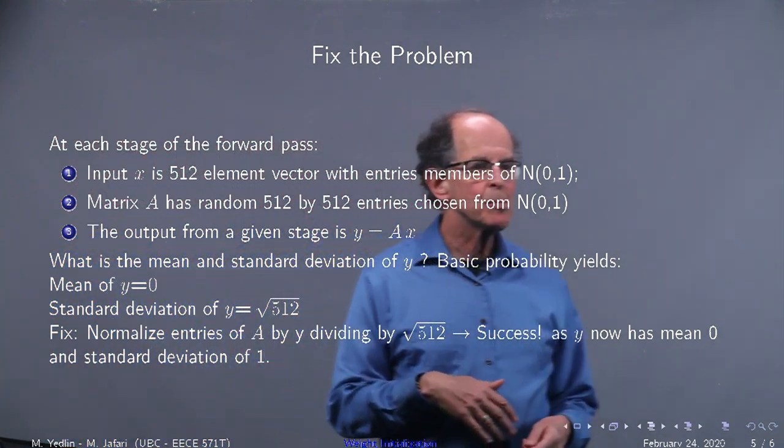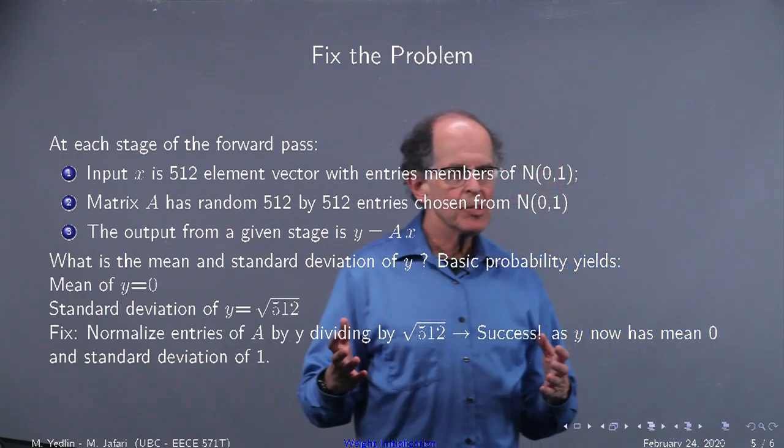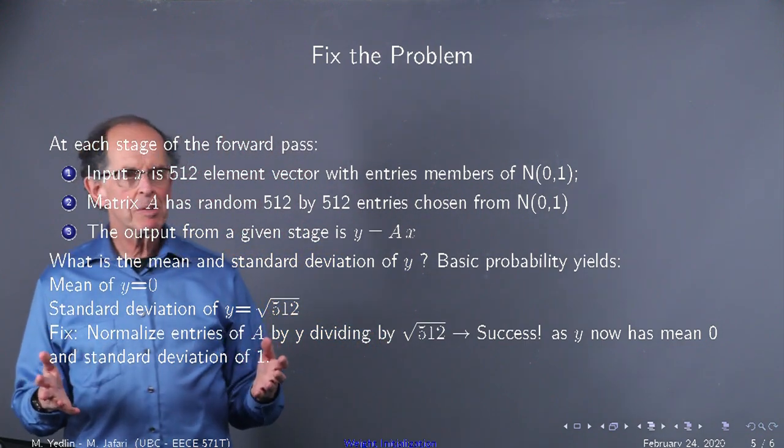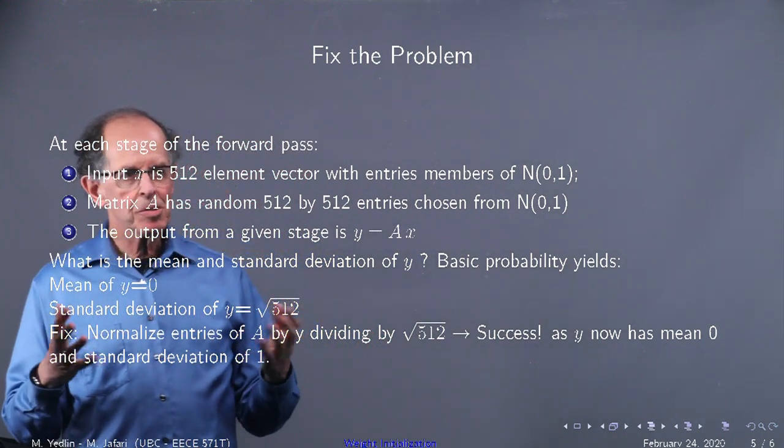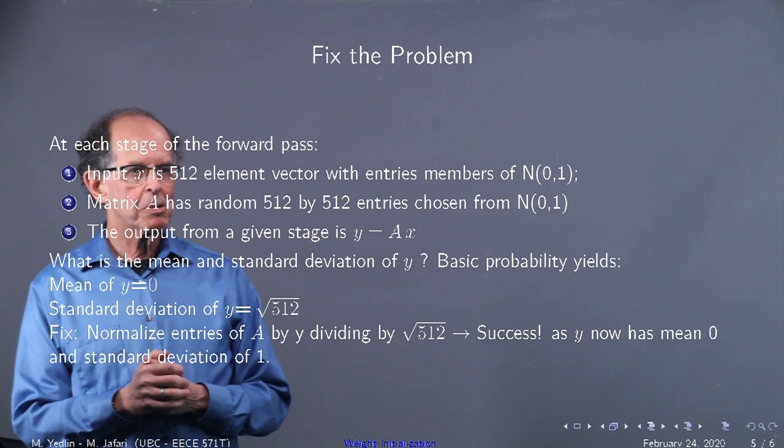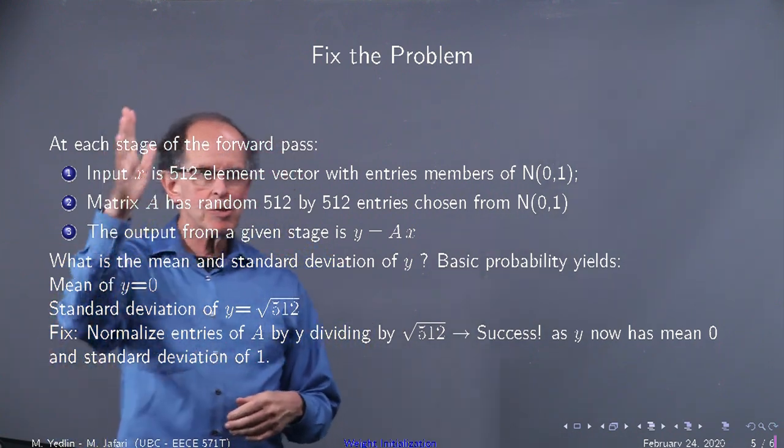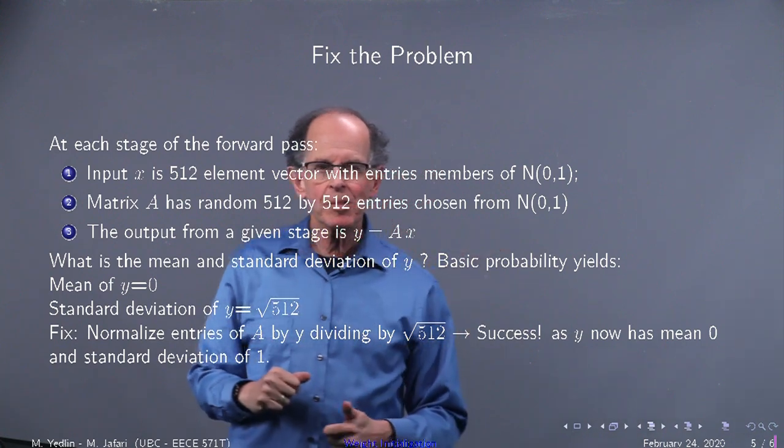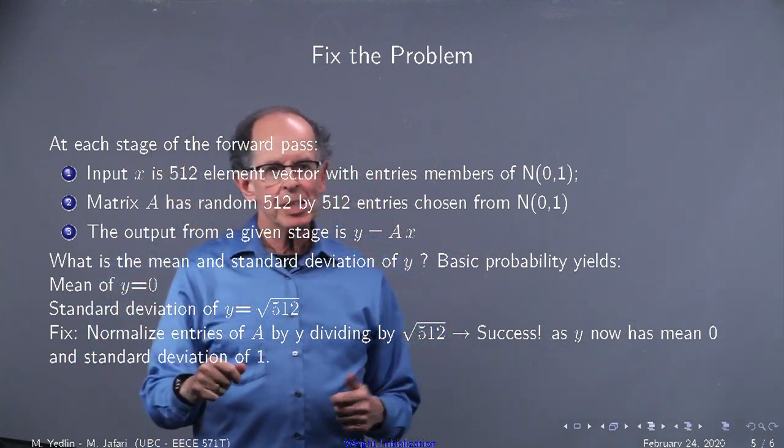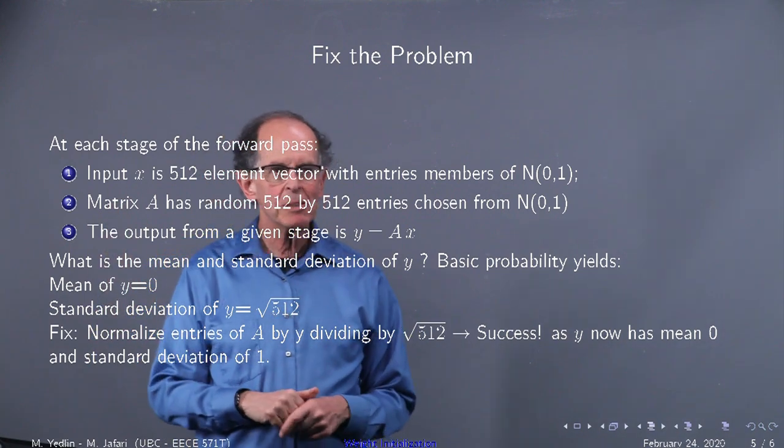Now this is basic probability. If the input x has 512 elements chosen from N(0,1), and matrix A is also the same 512 by 512 chosen from N(0,1), then the output from that first stage is y equals Ax. And of course, you can apply that argument all the way through. Instead of x the input, you'd have the activation. Here we're not using any activation functions, so we're just multiplying by one. So this is a good model: y equals Ax.